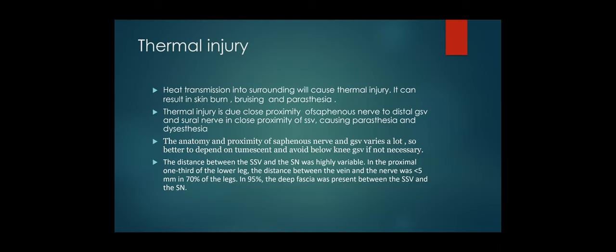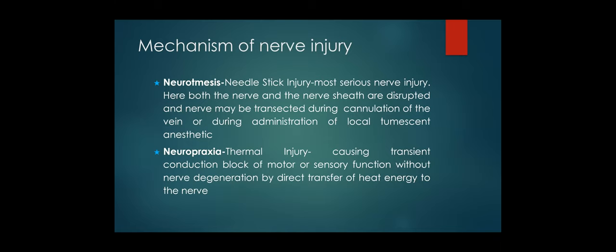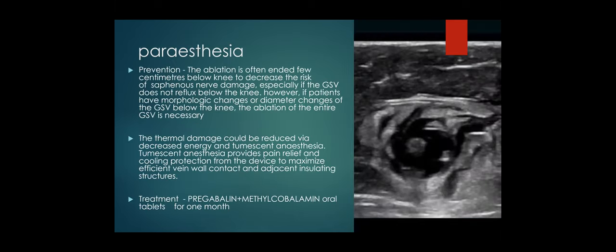It's not just thermal injury, but also neurotmesis. Needle stick injuries also cause paresthesia — when entering the vein or giving tumescent, you can injure the nerve sheath and disrupt the nerves. We should be very careful not only while ablating but also while entering the vein. If you have a high-frequency probe when working at ankle level and puncturing the GSV, always try to visualize the nerve and avoid it while puncturing the vein. Prevention: puncture near the knee joint for GSV and mid-calf level for SSV, and give proper tumescent around the vein so it is well separated from all other structures and heat is not dissipated.